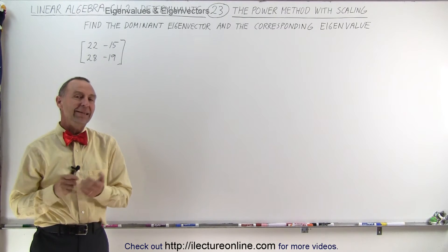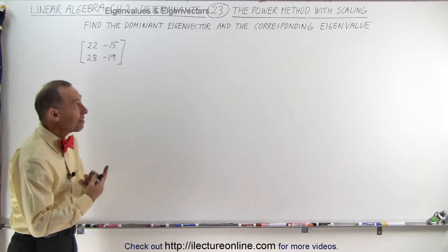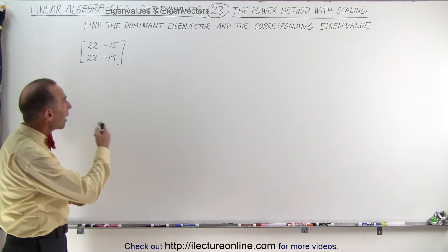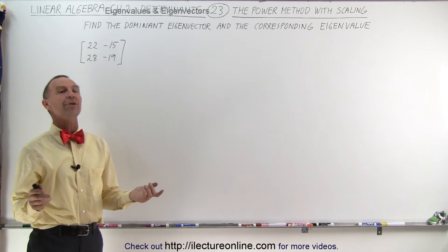Welcome to iLectureLine. In this example we're going to use the same method, the approximation method or the power method, to find the dominant eigenvector and the corresponding eigenvalue.